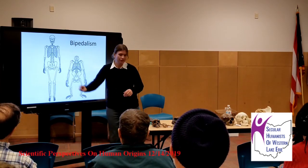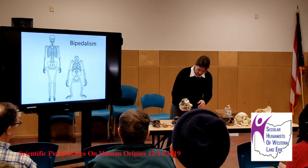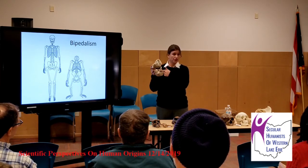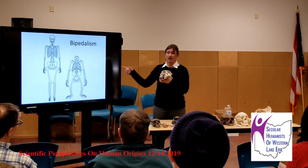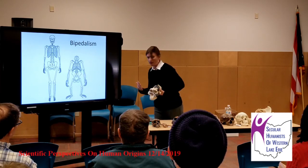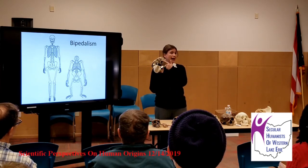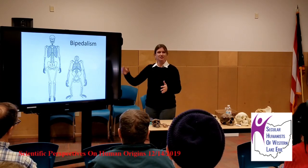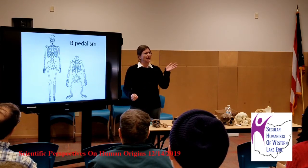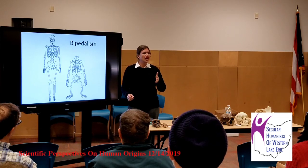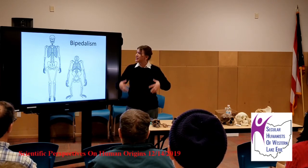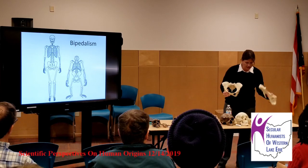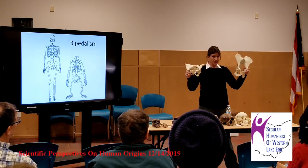Starting at the foramen magnum — the big hole for our spinal cord at the base of the skull — ours is farther underneath the skull than a chimpanzee's, because we hold our head above our body rather than out in front. Moving down, our spine has an S-shaped curve, with a backward and then forward curve, important for keeping our upper body centered over our pelvis. Our pelvis is very different from a chimpanzee's — basin-shaped or bowl-shaped — helpful for weight transmission and cradling our organs.